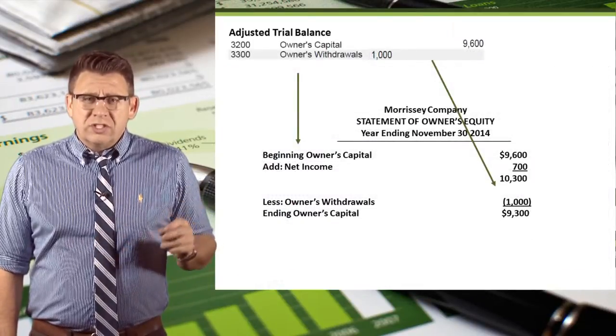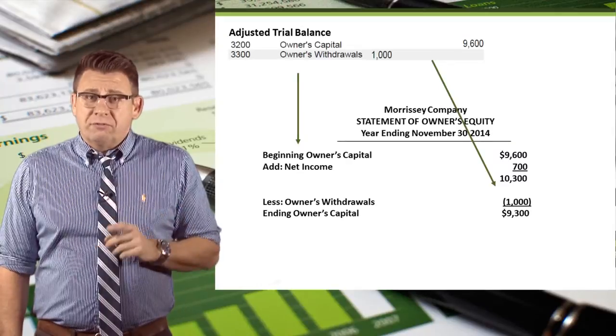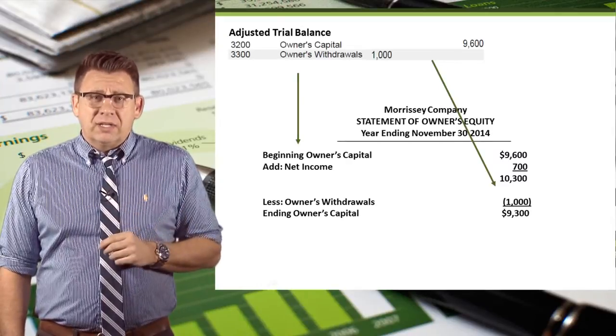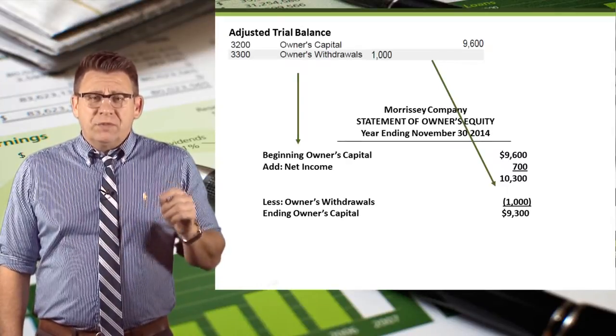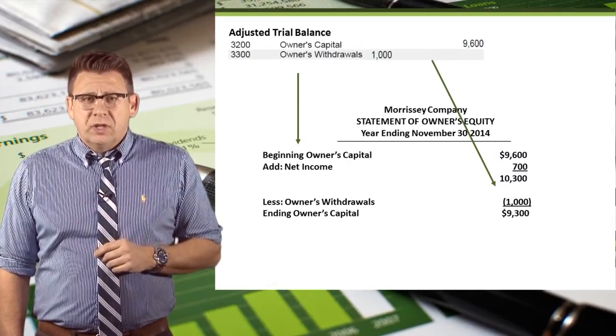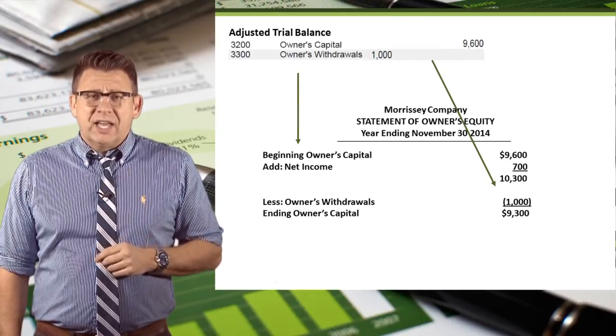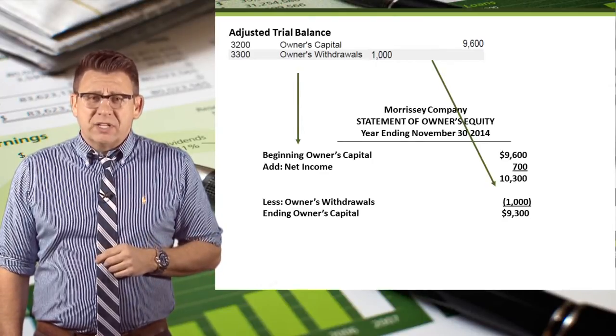We use owner's capital and owner's withdrawal from the trial balance and put that on the statement of owner's equity. Additionally, we will use net income from the income statement.